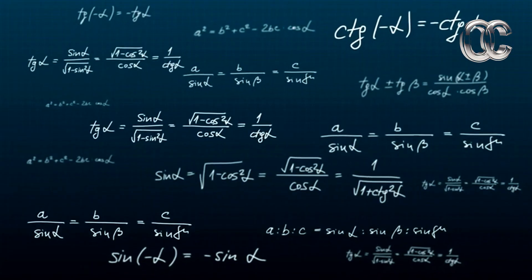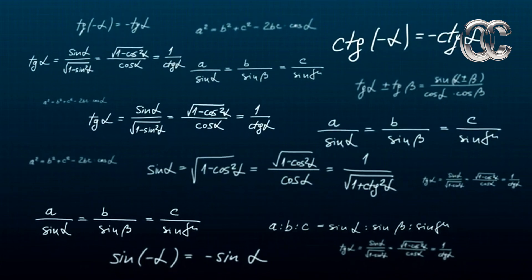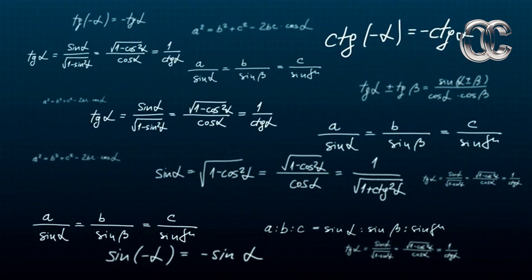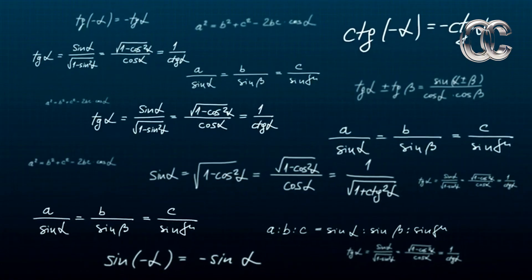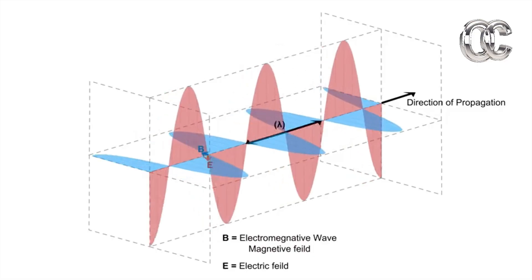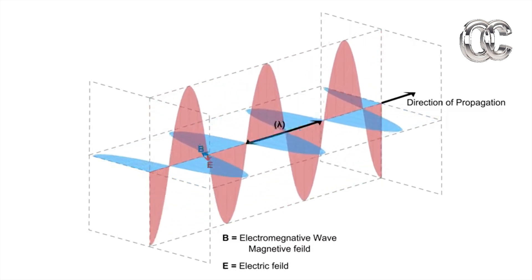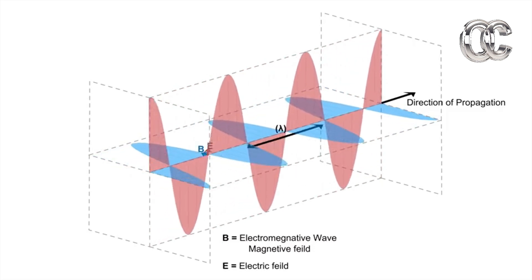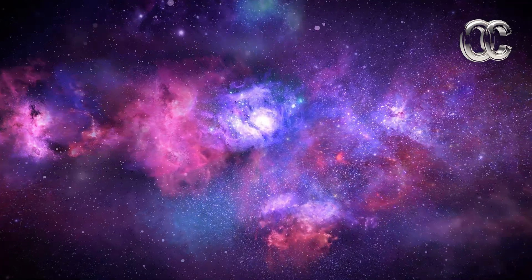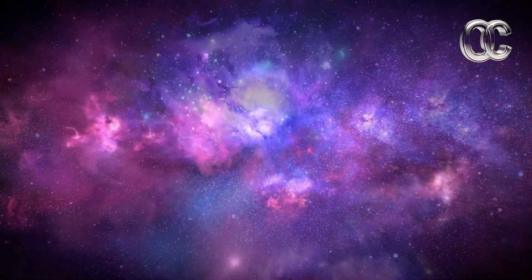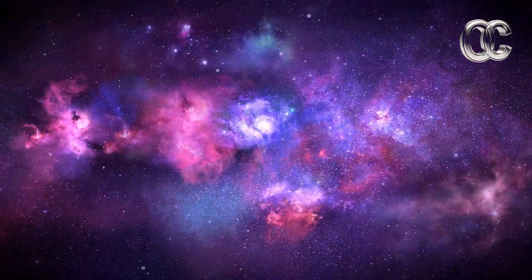The tunneling phenomenon can be mathematically understood using Schrödinger's equation. Schrödinger's equation describes how the wave function of a quantum system evolves over time. When a particle encounters a potential barrier higher than its energy, the wave function doesn't vanish. It decays exponentially within the barrier. If the barrier is thin, the decayed wave can extend to the other side, leading to a non-zero chance that the particle has tunneled through. This outcome is not due to any physical force pushing the particle through. It's a purely probabilistic event governed by the principles of quantum mechanics.